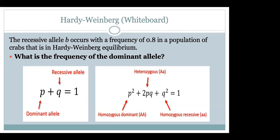We walk through how you work out the equation, then give students time to work it out on paper and we'll come back. For example: the recessive allele B occurs with a frequency of 0.8 in a population in Hardy-Weinberg equilibrium. The question becomes: what is the frequency of the dominant allele? This is very simple, and here's how we would work it out on the whiteboard.